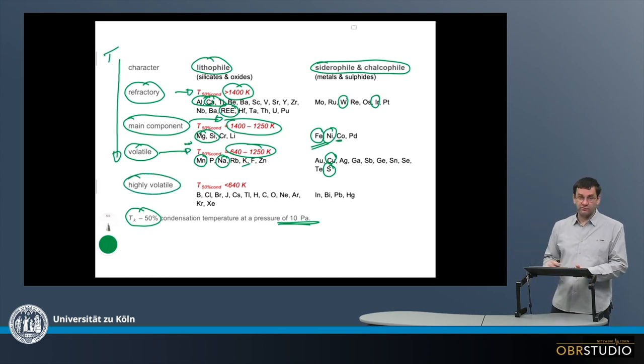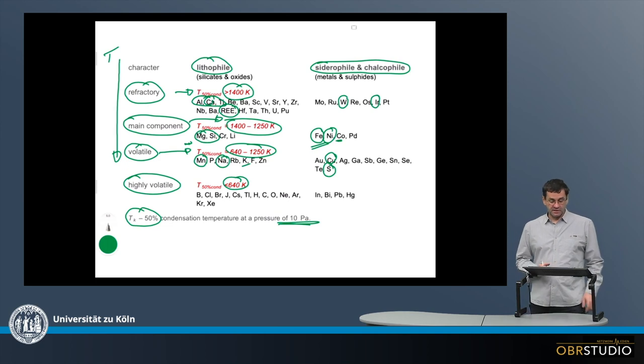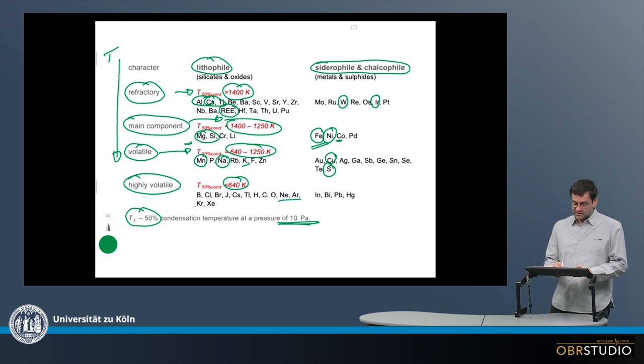Finally, the highly volatile elements condense at 50% condensation temperatures below 640 Kelvin. Here, for example, the noble gases condense, but also oxygen and hydrogen and carbon.